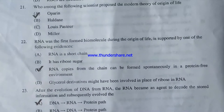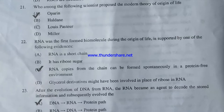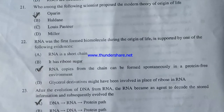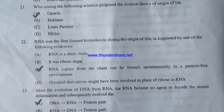Who proposed the modern theory of the origin of life — Oparin, Haldane, Louis Pasteur, or Miller? The answer is Oparin. RNA was the first formed biomolecule during the origin of life — which evidence supports this? Option A: RNA is a short chain. Option B: it has ribose sugar. Option C: RNA copies can be formed spontaneously in a protein-free environment. Option D: glycerol derivatives might have been involved. The correct answer is option C.